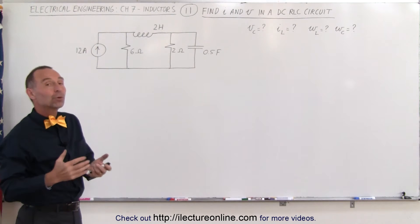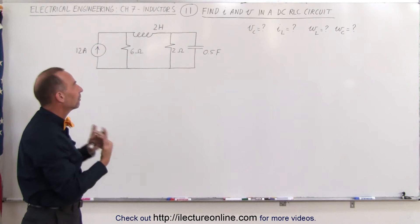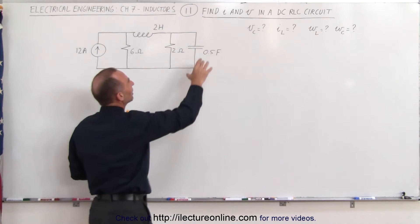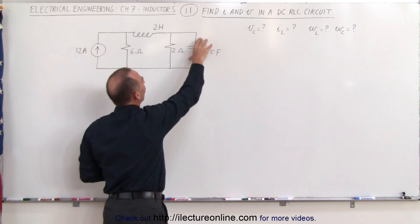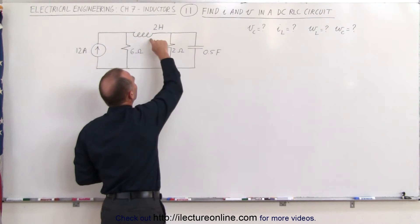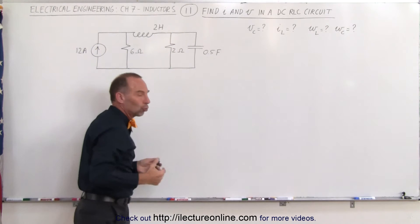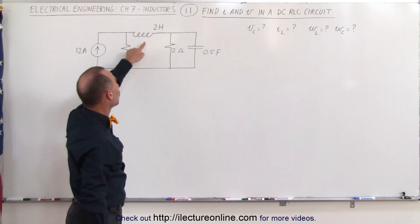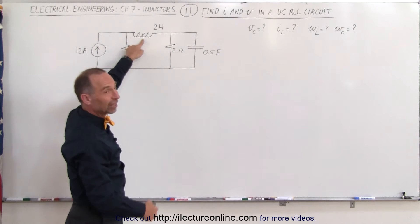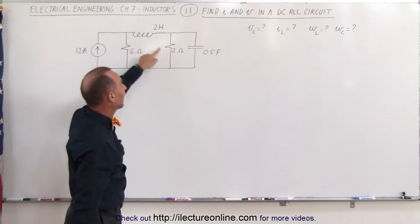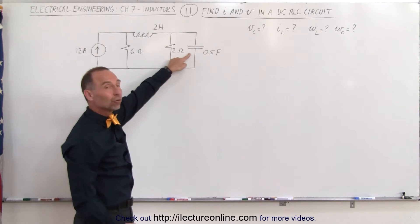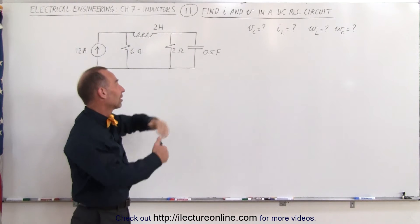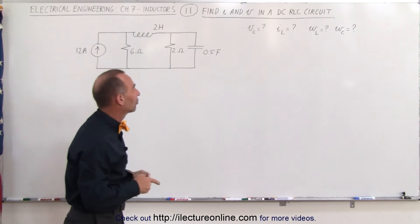Again, what we do is draw the equivalent circuit, replacing the capacitor with an open and the inductor with a short. At steady state there's no opposition to current through the inductor, so it's like a short circuit. And at steady state there's no current flowing through the capacitor, so it's like an open circuit.